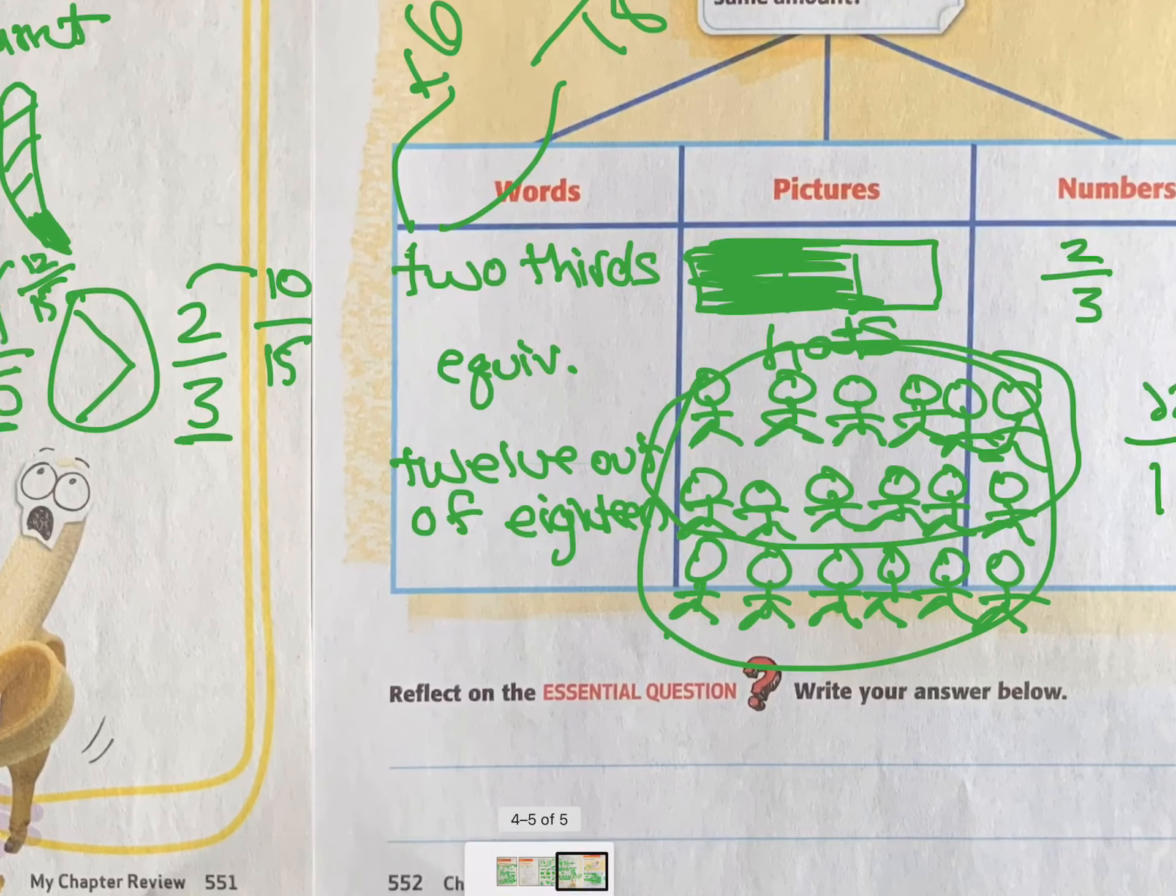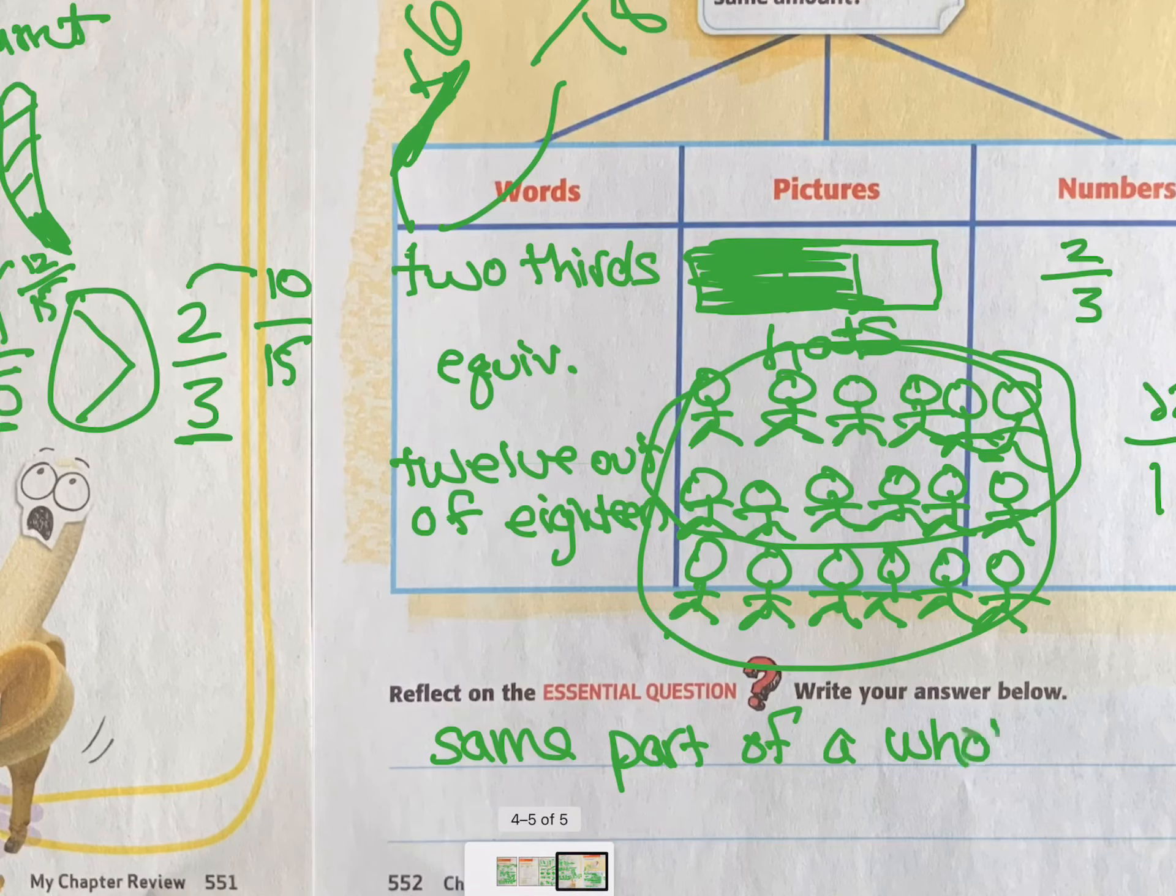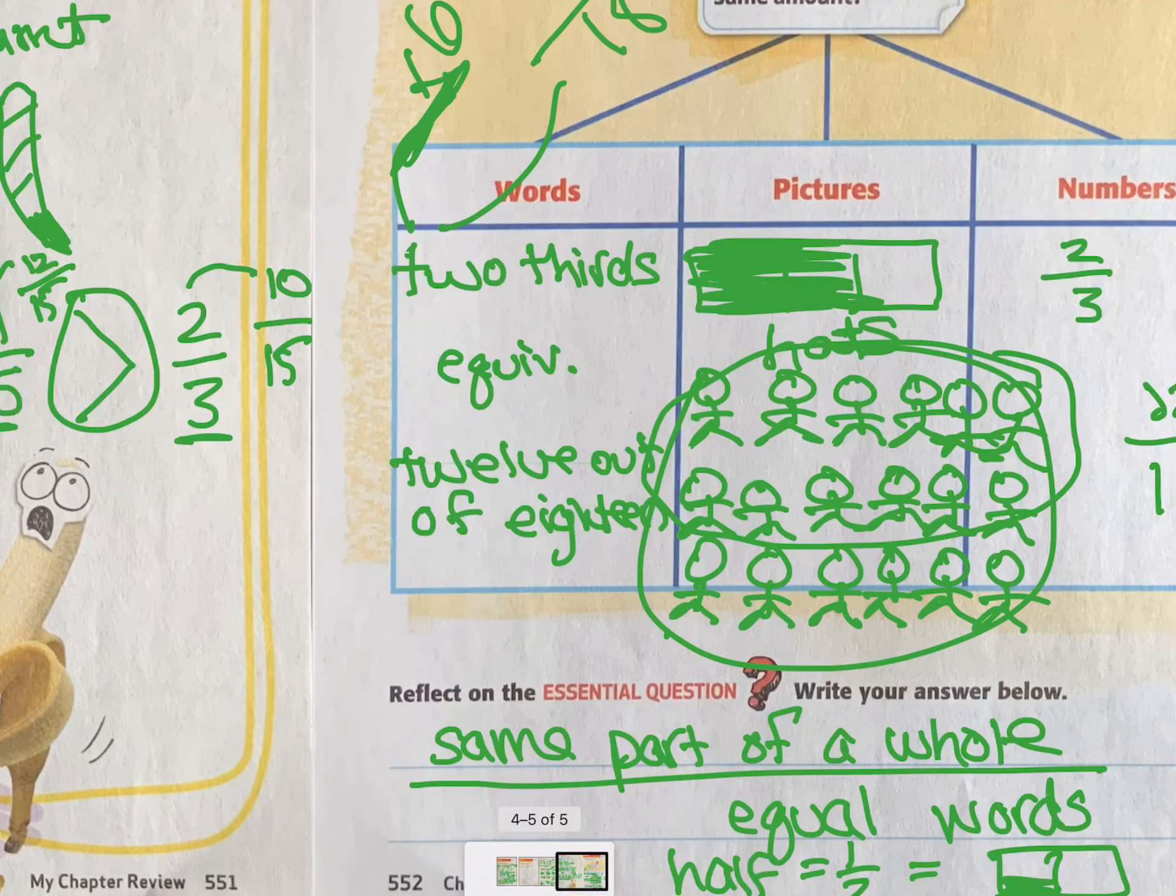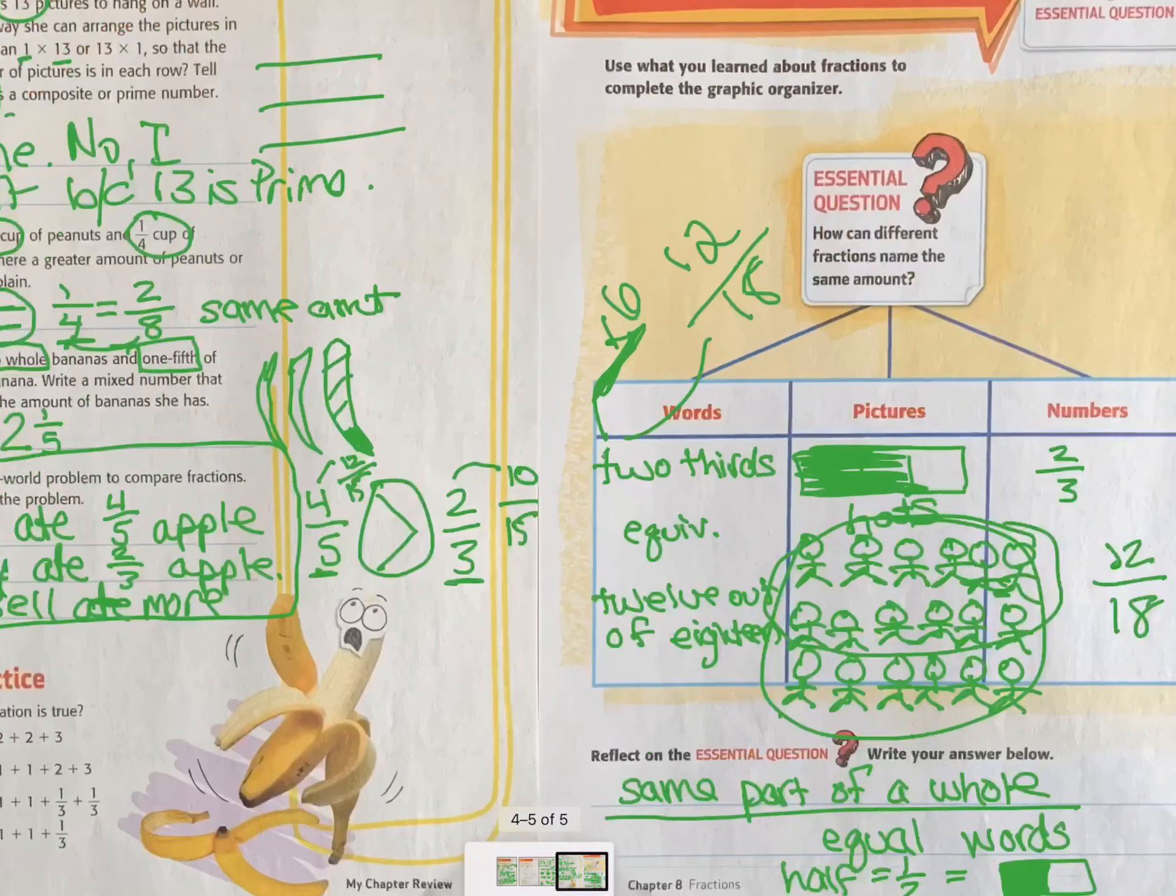you would just be telling me that I know fractions are equivalent because I can do the same thing to the top and the bottom. Or they mean the same part of a whole. They are equal. And you just talk to me about that. And then you can talk to me about how you can use words like the word half. And then that in numbers is 1/2. And it could show me something that shows 1/2. So you can use words, pictures, numbers to describe fractions and equivalent fractions.